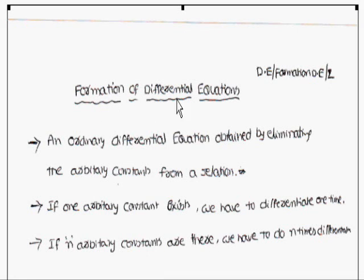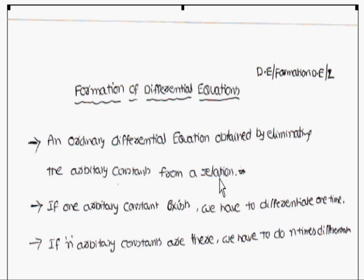Today we are going to discuss formation of differential equations. The main concept behind this is he will give you a relation, and we have to get a differential equation. An ordinary differential equation is obtained by eliminating the arbitrary constants from a relation. By eliminating the arbitrary constants from a relation, you will get a differential equation.